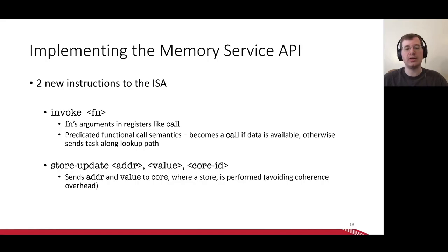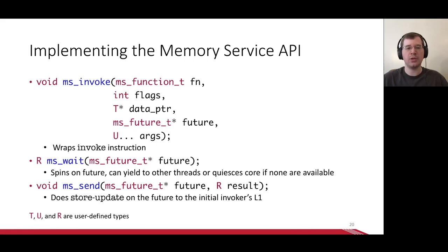The second instruction is store update. Similar to some previous proposals, this sends a message to a core to perform a store of a particular value to a specific address. Anything you can do with store update could be done with a regular store, but this would incur additional overhead. With these new instructions, implementing the memory services API is pretty straightforward. msinvoke is a wrapper around the invoke instruction. mswait spins on the future and, like other synchronization primitives, can yield to other threads or quiesce the core. mssend fills in the future through memory using store update to avoid unnecessary coherence traffic.